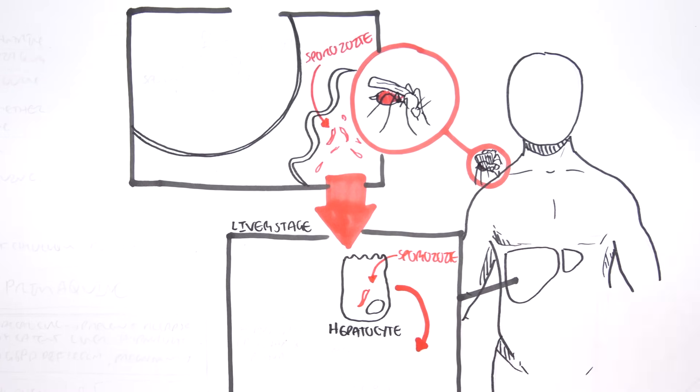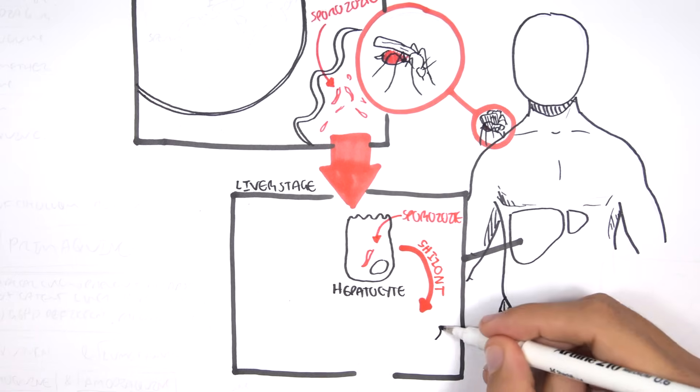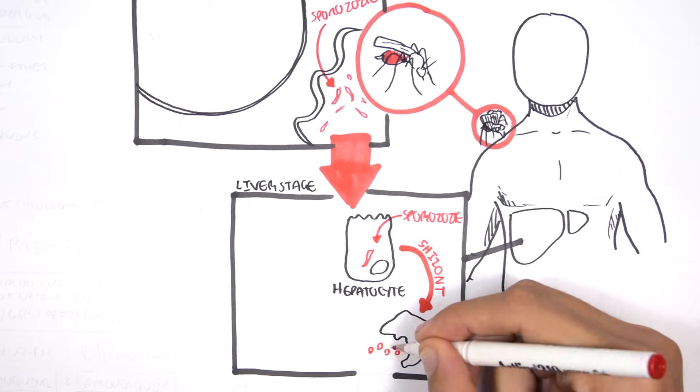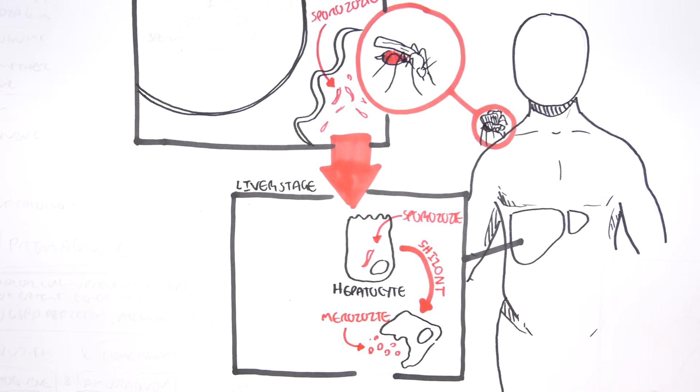Within the hepatocytes, the sporozoids will replicate, mature into schizont, and finally, rupturing, releasing many merozoites, which is another form of the parasite.